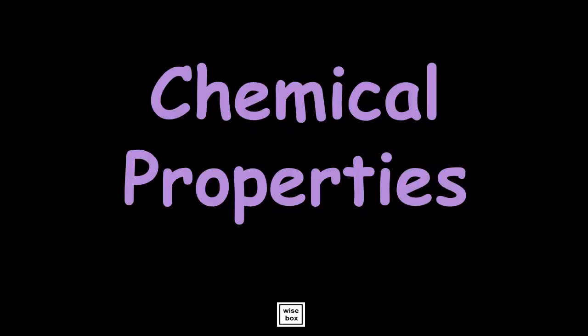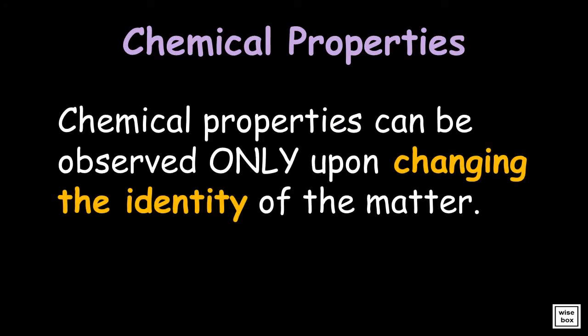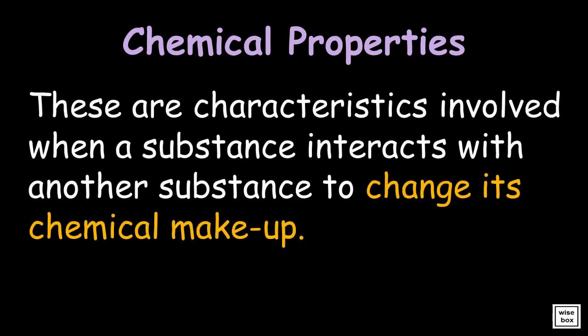The chemical properties of matter. Chemical properties can be observed only upon changing the identity of the matter. These are characteristics involved when a substance interacts with another substance to change its chemical makeup.